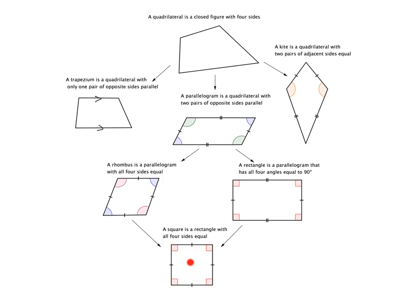Our most special quadrilateral of all is the square. You can think of it as a special rectangle where all four sides are equal, or as a special rhombus where the angles are 90 degrees. What the square has is all four sides equal and all four angles equal to 90 degrees — it combines the special properties of both the rectangle and the rhombus.